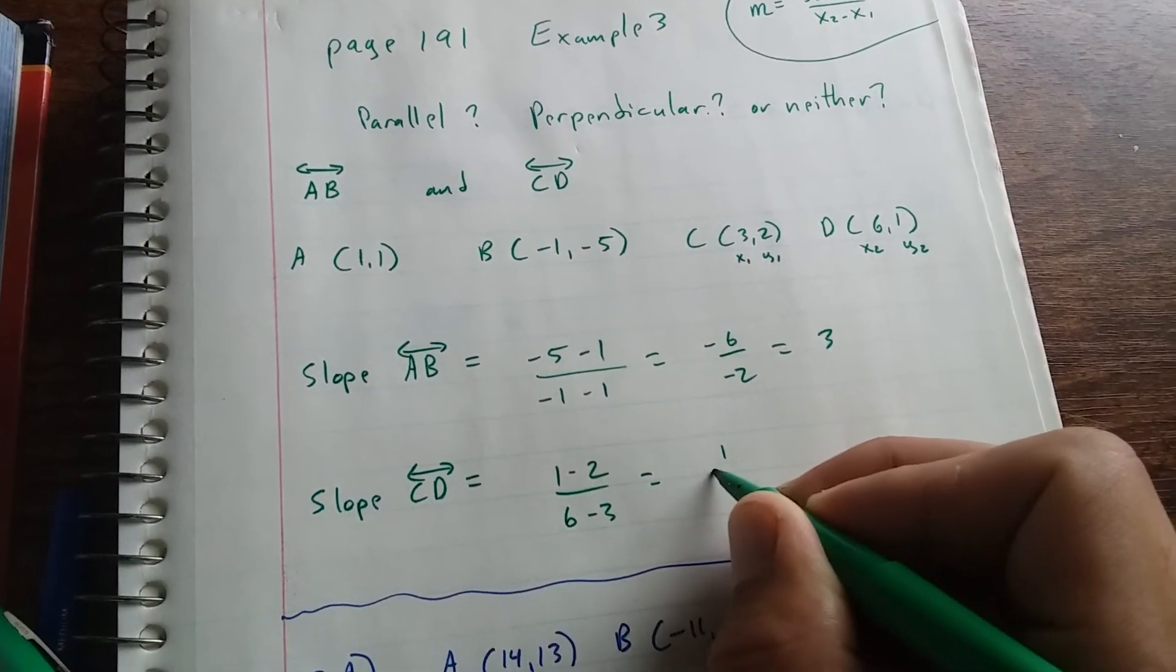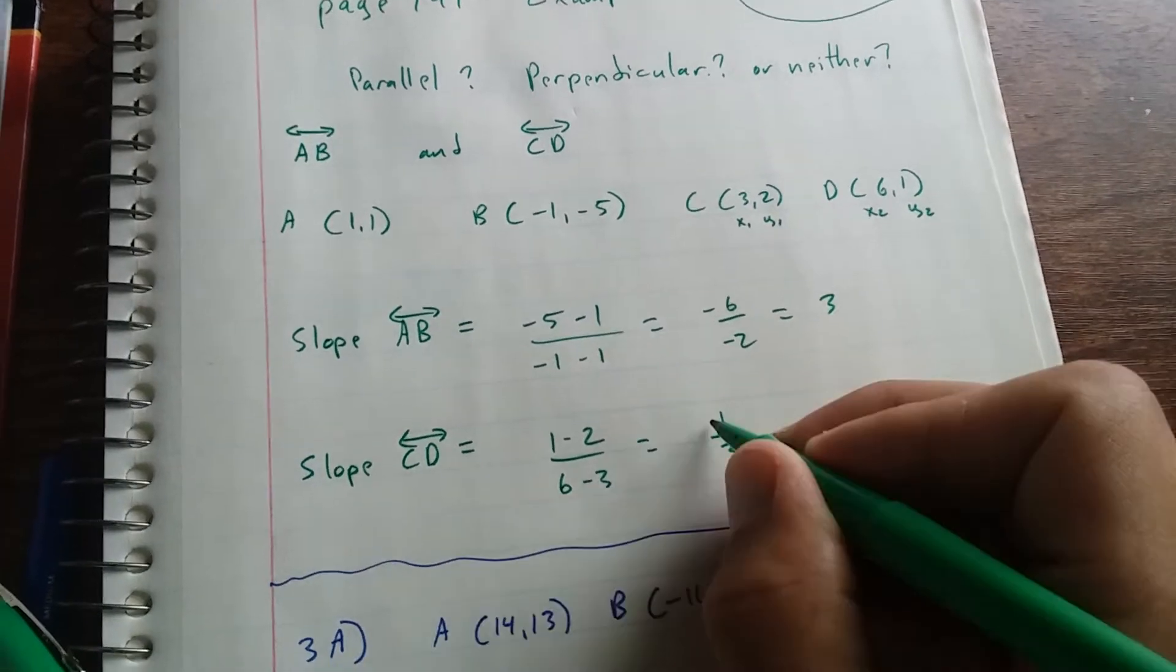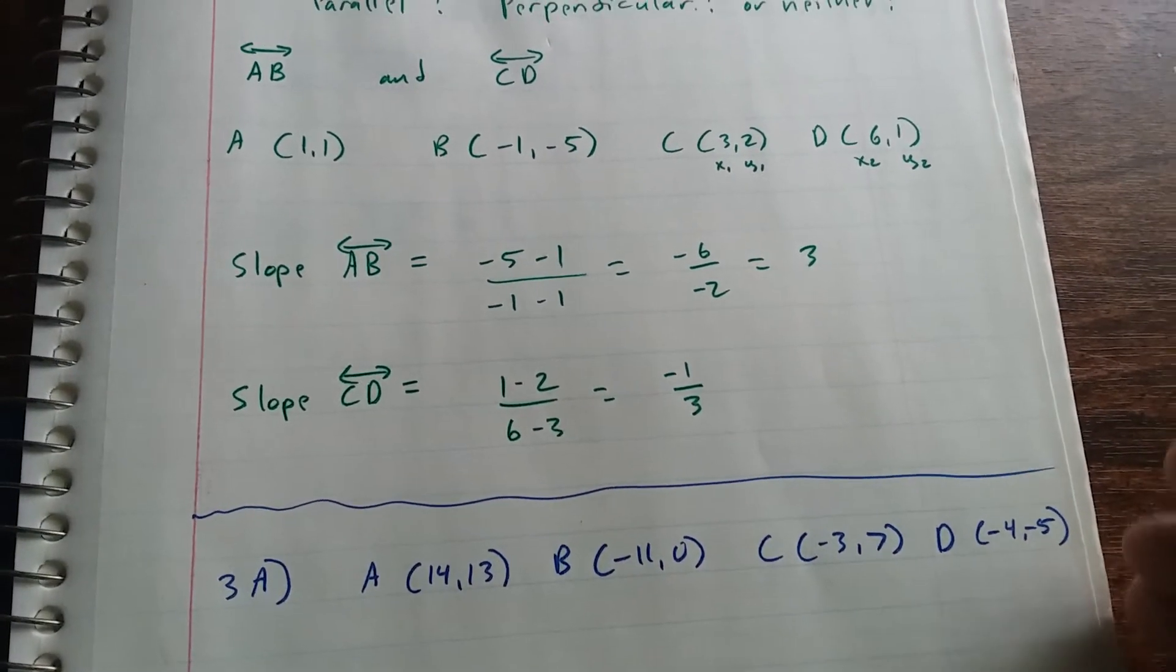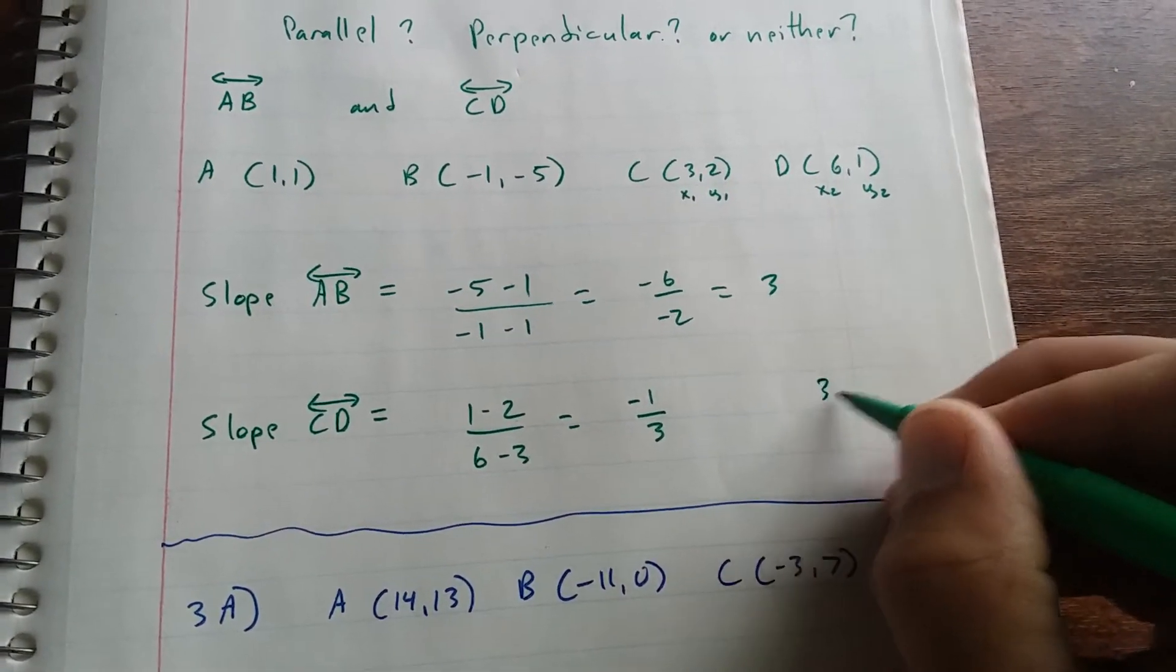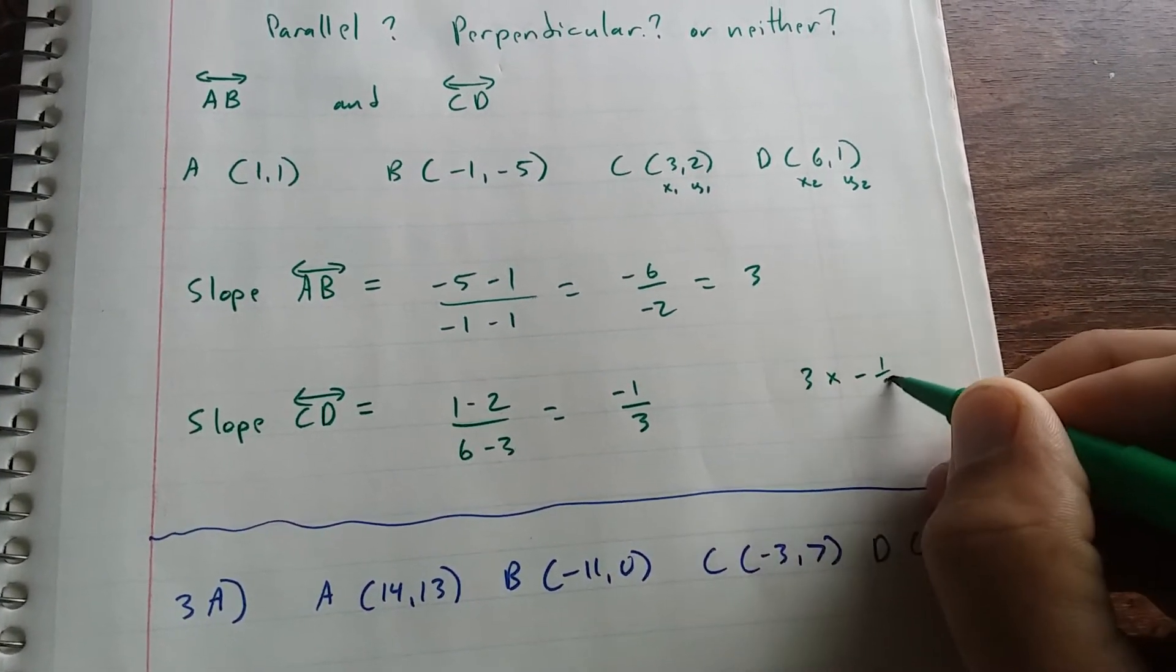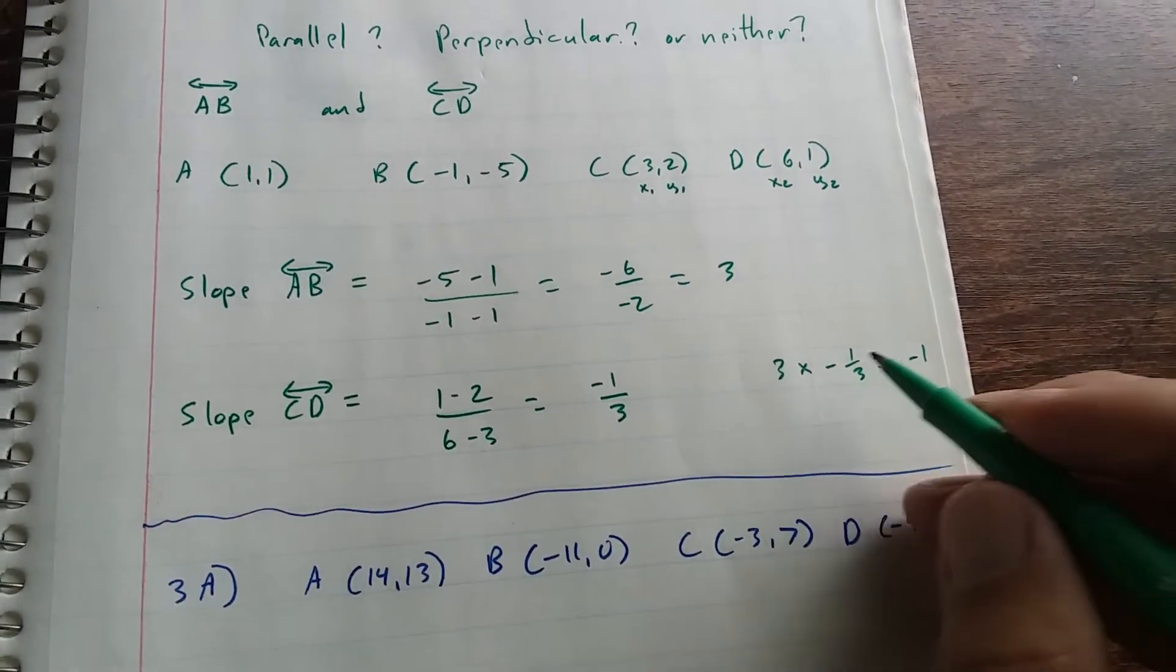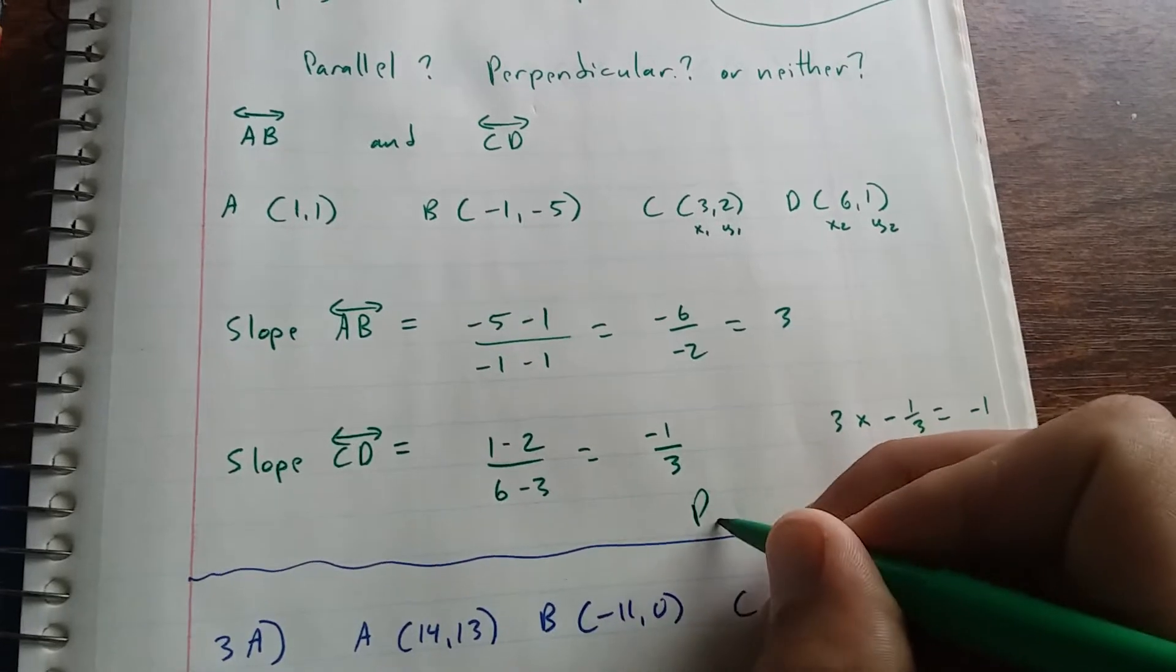6 minus 3. You get negative 1 over 3. Okay, and now the slopes are not the same, so they are not parallel. But if you were to multiply them, 3 times negative 1 third is negative 1. Since the slopes multiplied together give you a product of negative 1, they are perpendicular.